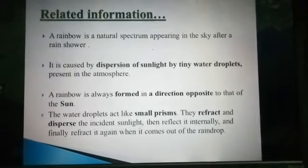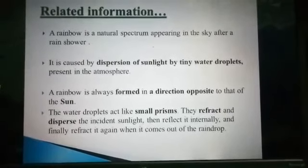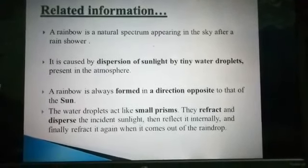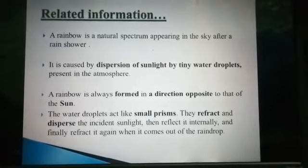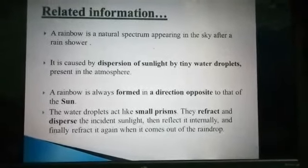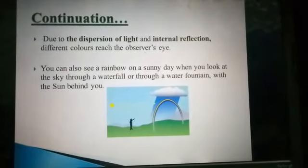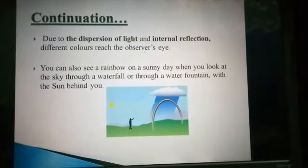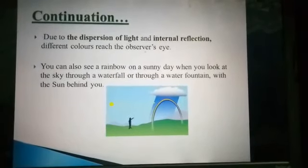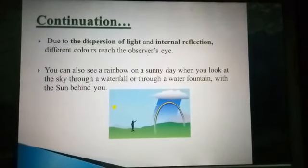The water droplets reflect and disperse the incident sunlight, then reflect it internally — total internal reflection — and finally refract it again when it comes out of the rain drop. Due to dispersion of light and internal reflection, different colors reach the observer's eye.